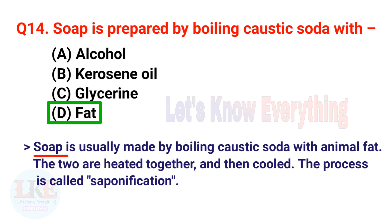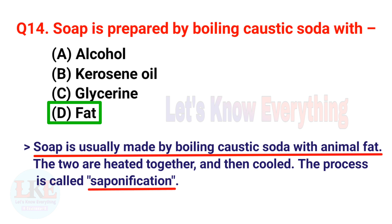Soap is made by boiling caustic soda with animal fat. The two are heated together and then cooled. This process is called saponification.